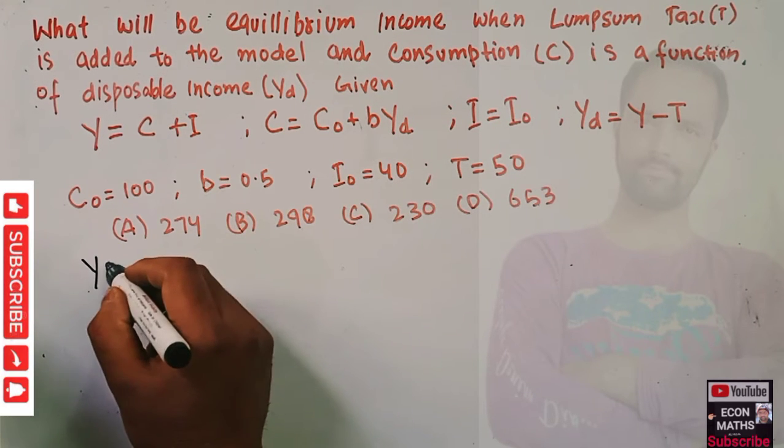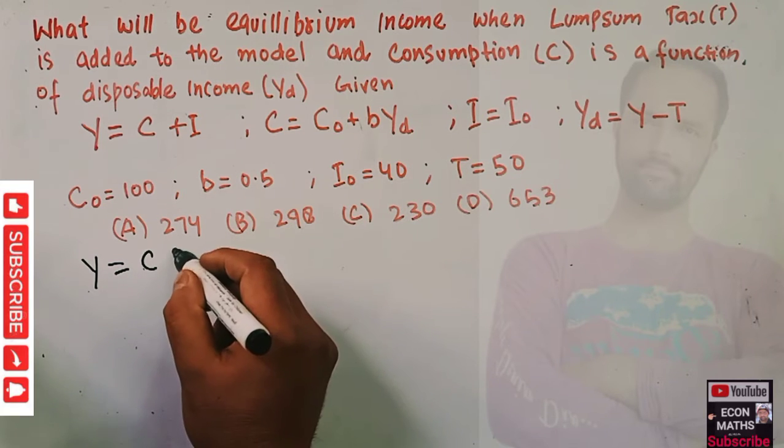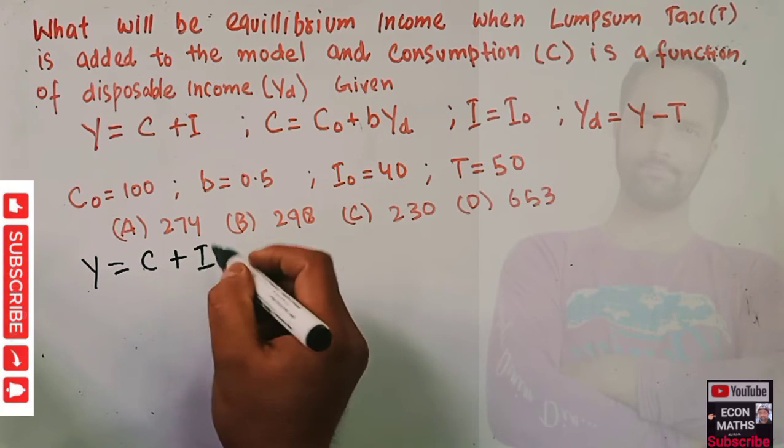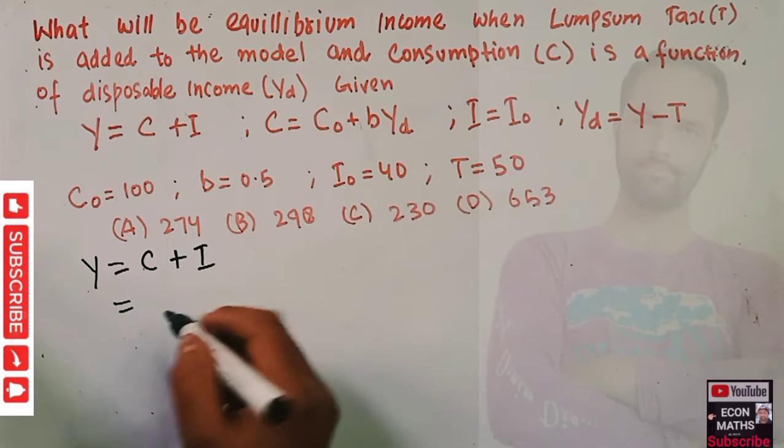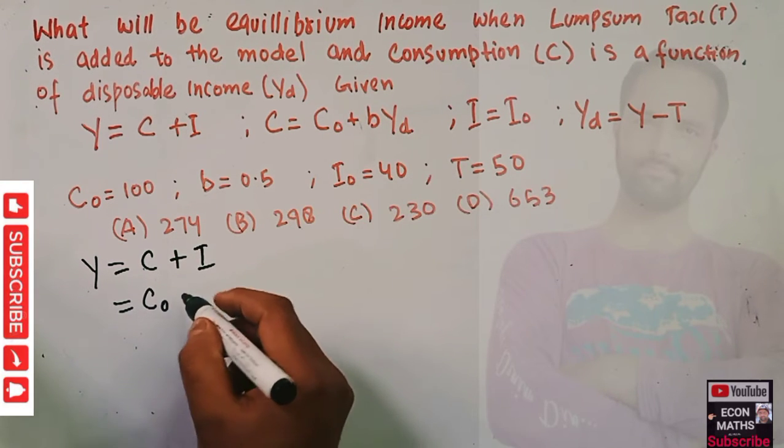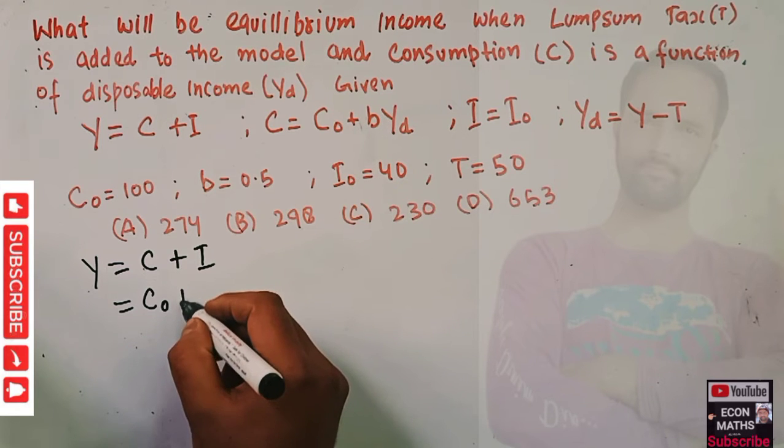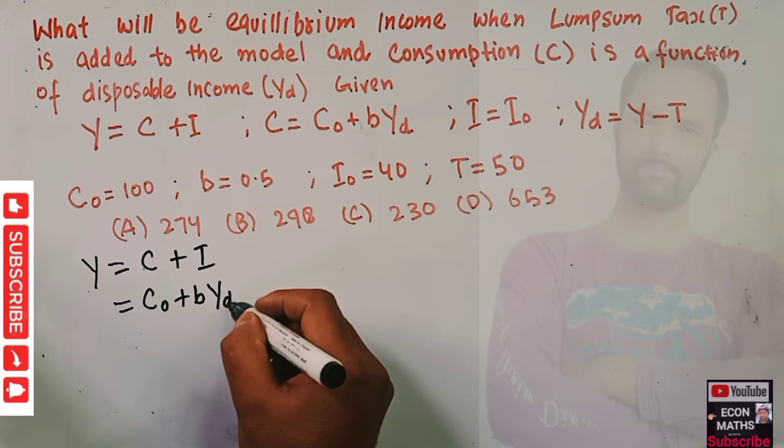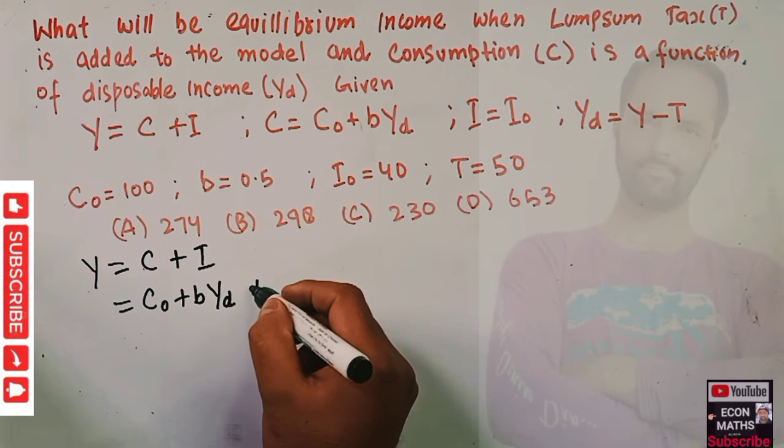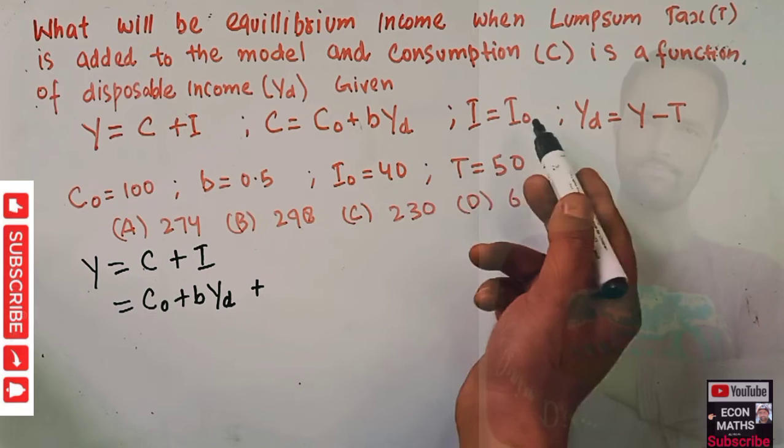How do we solve this? Simple. We have the national income identity Y equals C plus I. Now write C equals C naught plus b times Y subscript d, plus autonomous investment I naught.